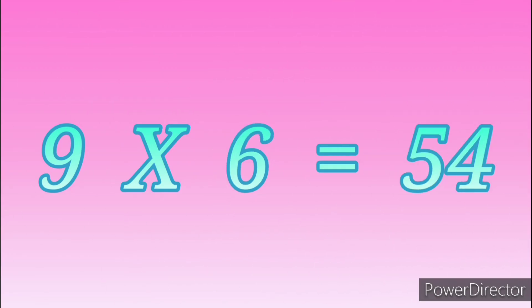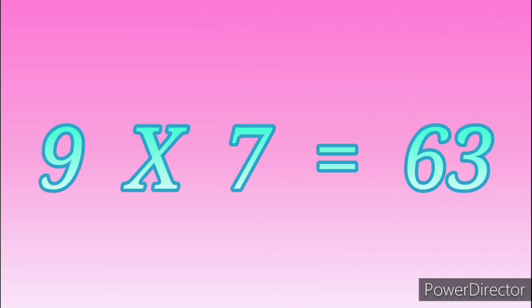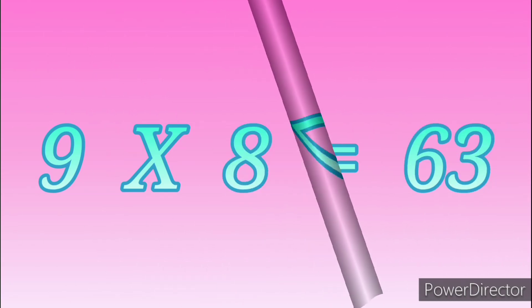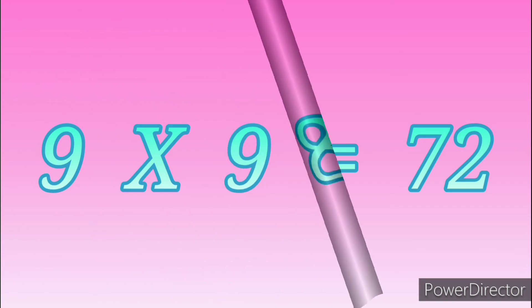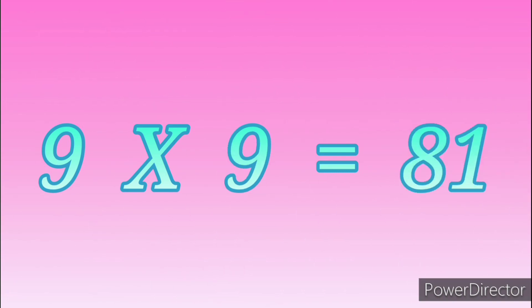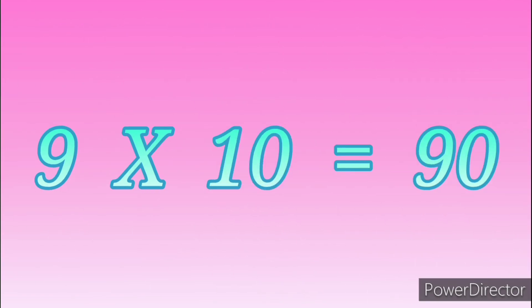9 sixes are 54. 9 sevens are 63. 9 eights are 72. 9 nines are 81. 9 tens are 90.